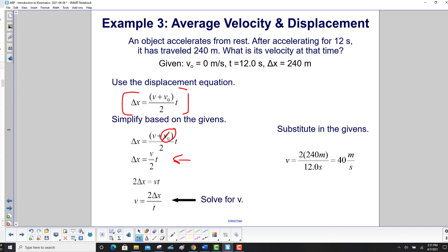Now we want to solve for v. Multiply both sides by 2, and then divide through by t, and then flip left to right. So we have v is 2Δx over t. Finally, we can substitute in the givens right at the very end, and we get 40 meters per second.